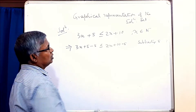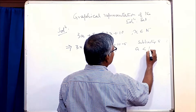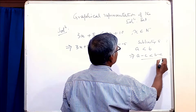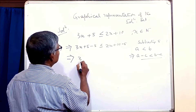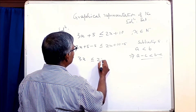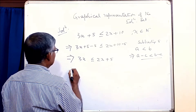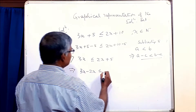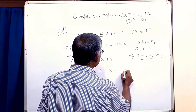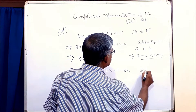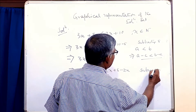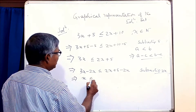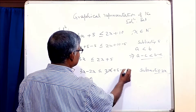Students, you know if a is less than b, this implies that a minus c is less than b minus c. This implies that 3x is less than or equal to 2x plus 5. Subtracting 2x from both sides, this implies that x is less than or equal to 5.